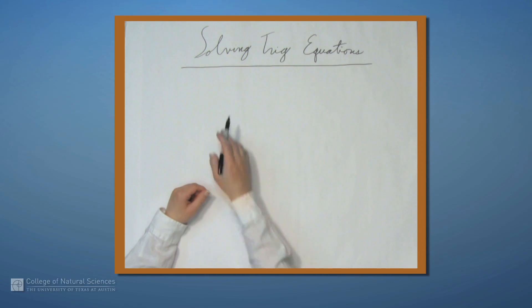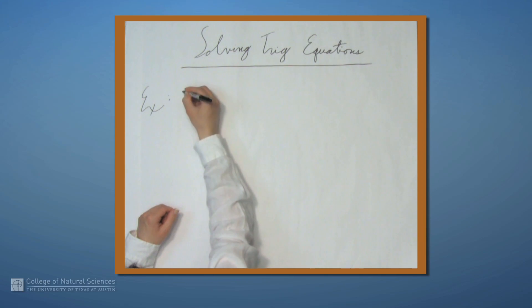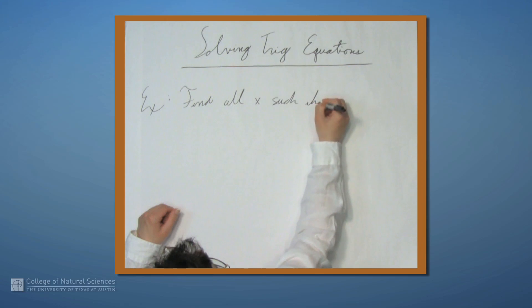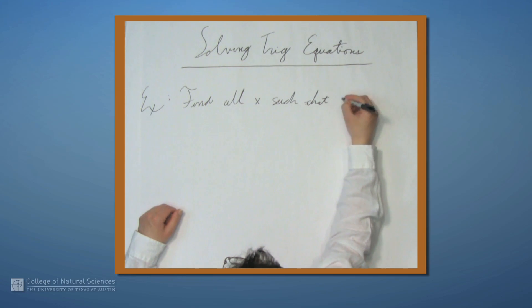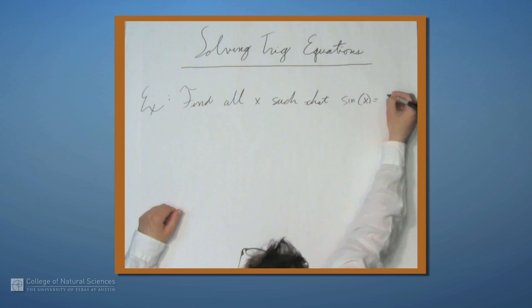So we're here at the example table, and in this video we're going to solve some trig equations. So let's start off with an example. So we want to find all x such that sin(x) equals 1/2.